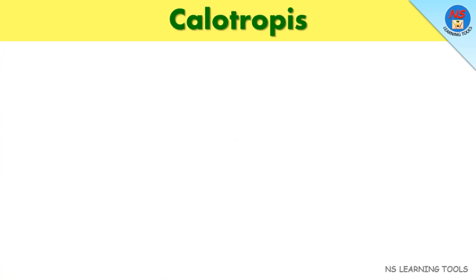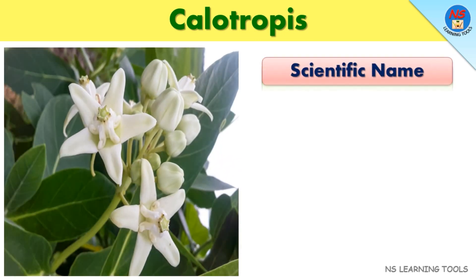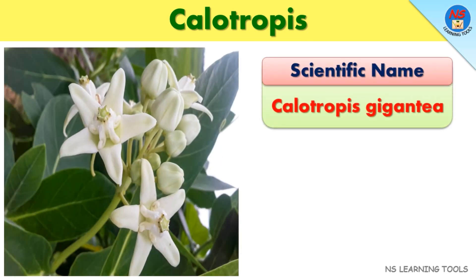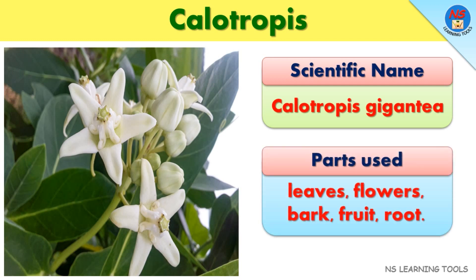Collotropes. Scientific name: Collotropes gigantea. Parts used: Leaves, flowers, bark, fruit, root.